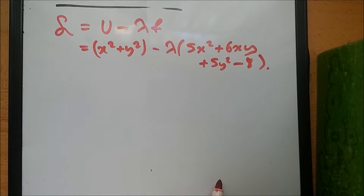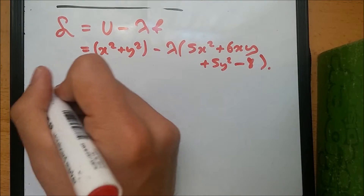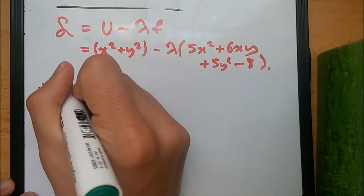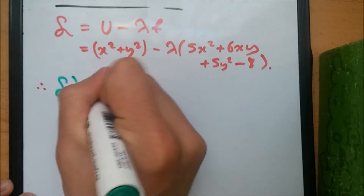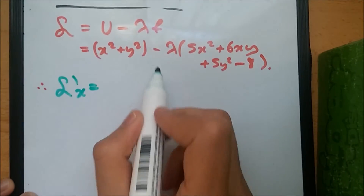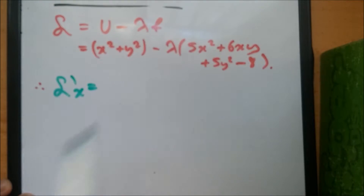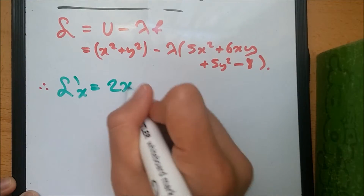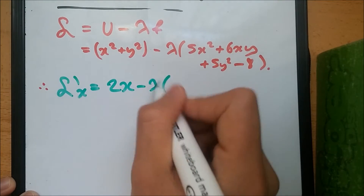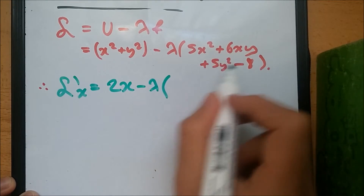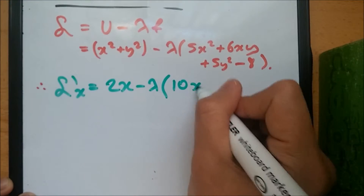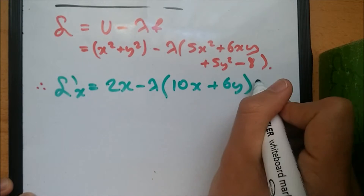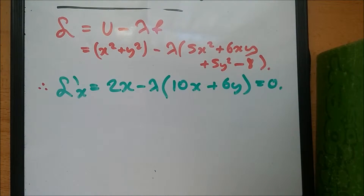Now we calculate partial derivatives. Differentiating partially with respect to x — y and lambda are both constants — we get 2x minus lambda times (10x plus 6y) equals 0, from the first-order condition.